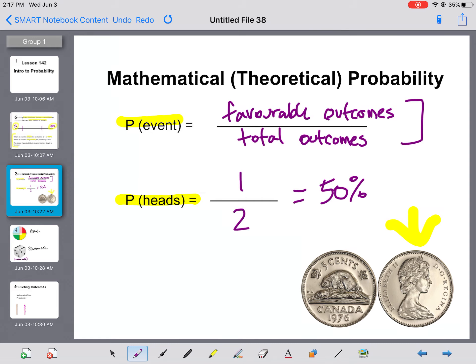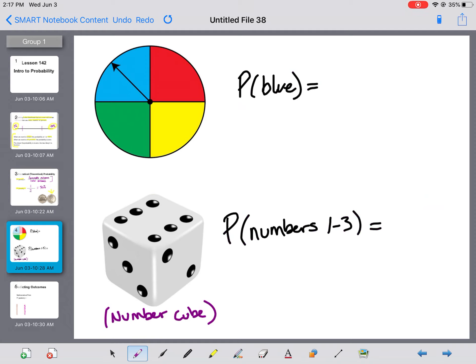All right, so that's all that mathematical or theoretical probability is. So let's go over a couple more examples. So in a situation where it's not a coin, you have more options. The probability of spinning blue on this spinner: well, there's one blue spot out of four total outcomes, one blue spot out of four total spots on that spinner. So the probability of that happening is one over four, or one quarter.